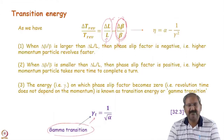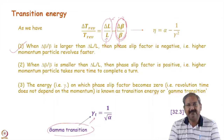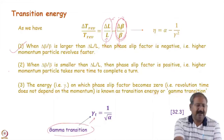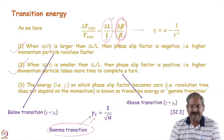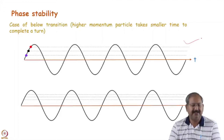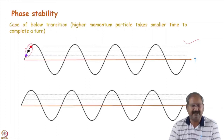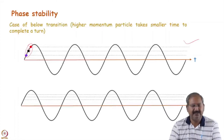When the machine operates below transition, a higher-momentum particle takes shorter time to complete a revolution — it is faster. Consider three particles arriving at the RF cavity: the middle one is the synchronous particle that arrives at the synchronous phase and will return to the same phase after one turn. Now suppose the machine is operating below transition: higher-momentum particle takes smaller time. The particle arriving at higher field gets more energy than the synchronous one.